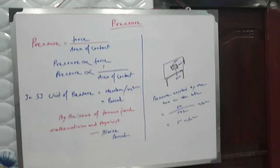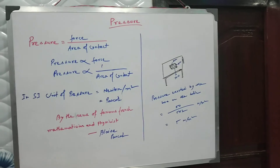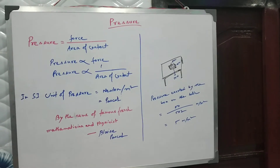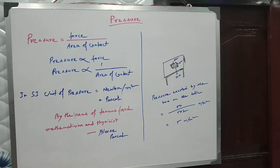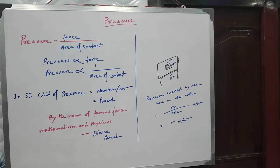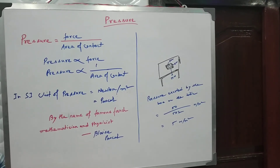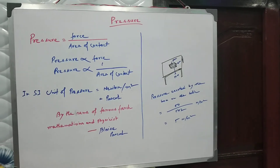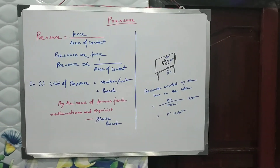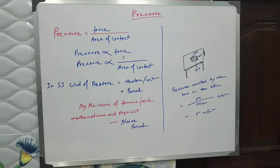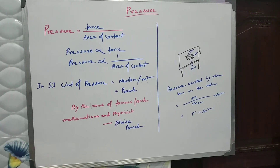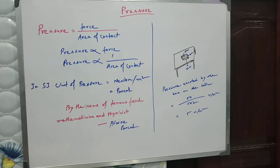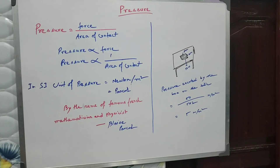To summarize: to increase pressure, you either increase the force or decrease the area of contact, or both. In the SI system, the unit of pressure is newton per meter square, which is known as pascal, named after French mathematician and physicist Blaise Pascal.